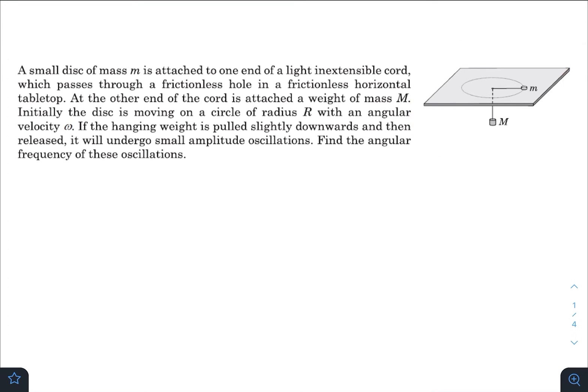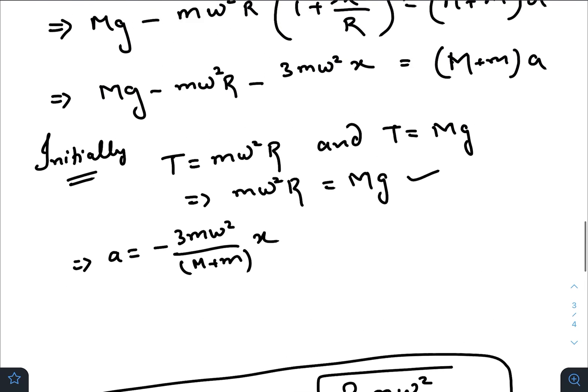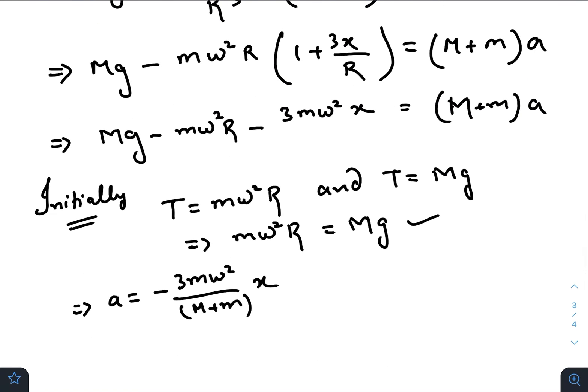So initially if you remember the initial diagram that was given here, initially what happens is that the disc of mass small m was performing a circular motion. So the tension initially, it was T, it was providing the required force and it was also balancing the weight downwards. So Mg equals to m omega squared R. So these two things get cancelled out, so the final expression of acceleration.